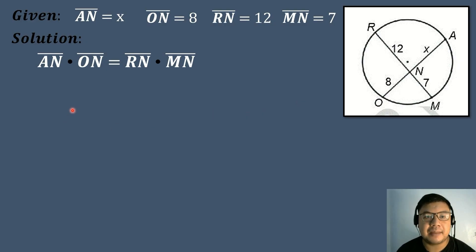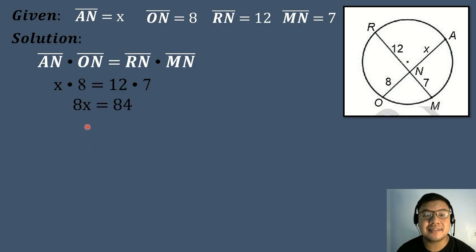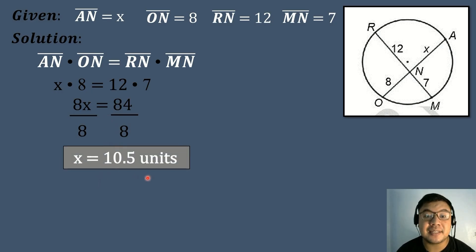We substitute the corresponding values: X times 8 equals 12 times 7. Simplifying, 8X equals 84. We divide both sides by 8: 84 divided by 8 equals 10.5. So the measure of segment AN is equal to 10.5 units.